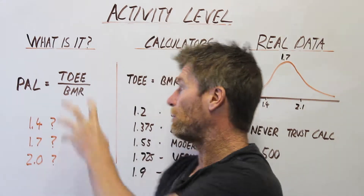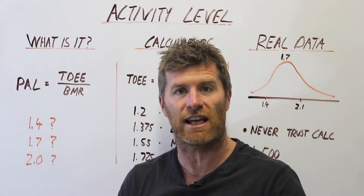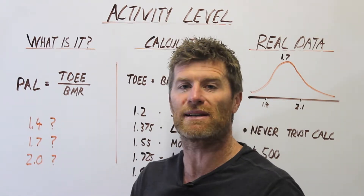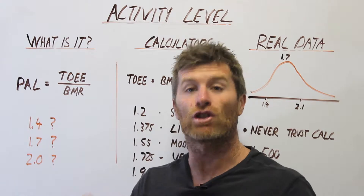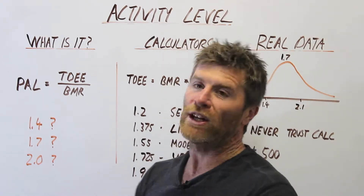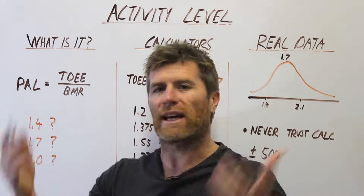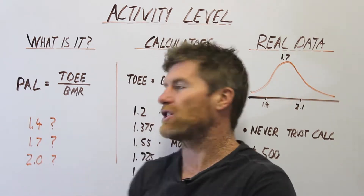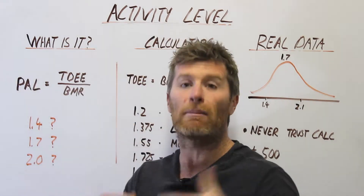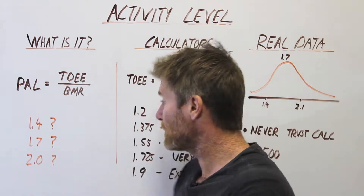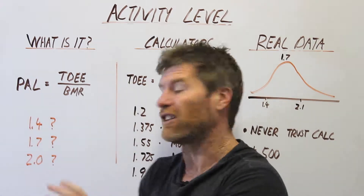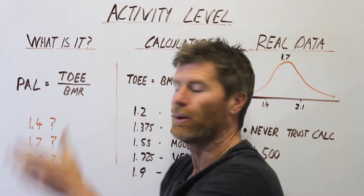Typically, your basal metabolic rate — your resting energy expenditure — accounts for about 60% of your total energy expenditure. So when you flip that, you get an average activity level of about 1.7. A typical person has a physical activity level of about 1.7.